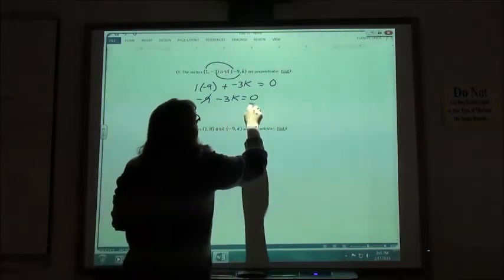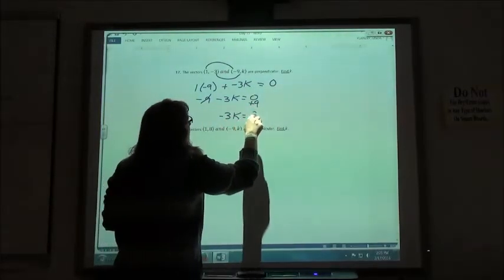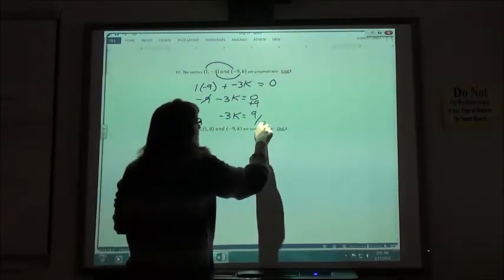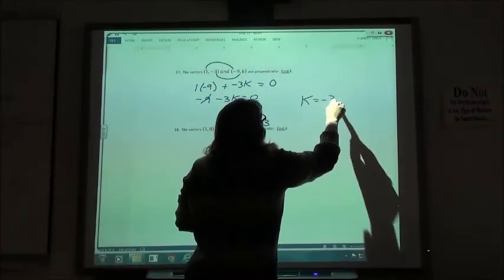I'm going to add my 9. So negative 3k equals positive 9. Divide by my negative 3. k would have to be negative 3.